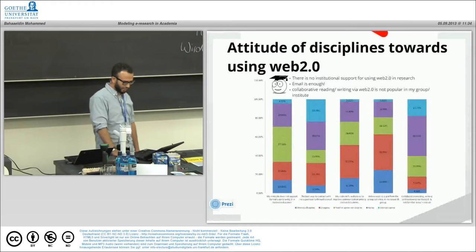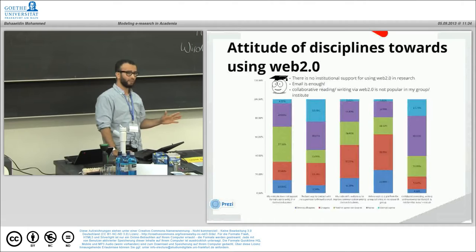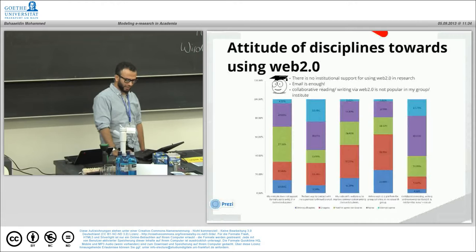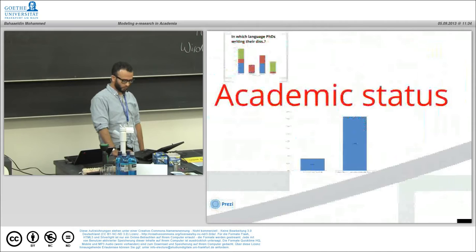Attitude of discipline toward using web 2.0: they said there is no institutional support for using web 2.0 in research. Email is enough, as colleagues said, for doing such communication and collaboration. Collaborative reading and writing via web 2.0 is not popular in their group.